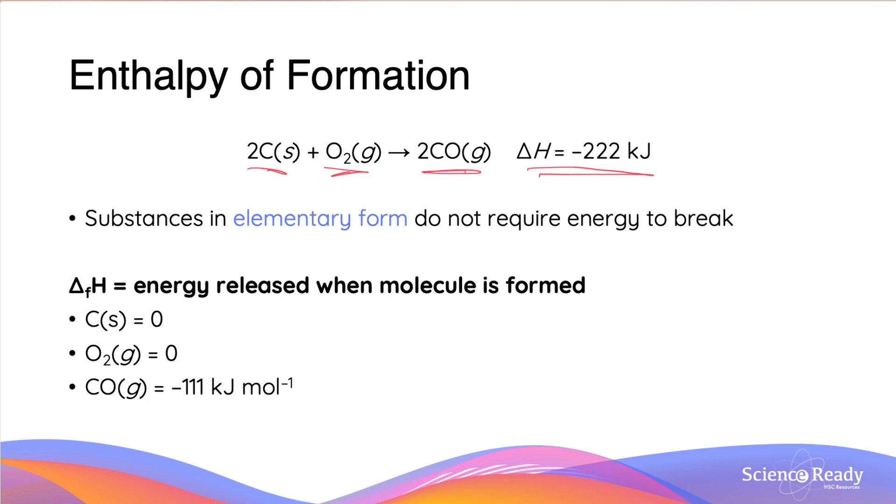By our stoichiometric ratio, we know that for 2 moles of carbon monoxide that's produced, it is going to have a delta H change equal to minus 222 divided by 2, and that is going to equal to minus 111 kJ per mole.